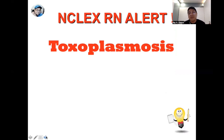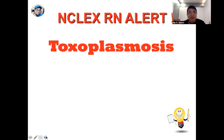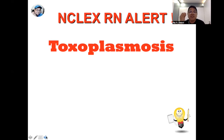The second important topic I'd like to highlight is toxoplasmosis, because more often than not we know very little about it. This is a parasitic condition caused by a protozoa known as Toxoplasma gondii, transmitted either through cat litter or half-cooked meat. Pregnant clients who develop the infection can develop complications specifically for the baby — toxoplasmosis can be fetotoxic. Therefore, always instruct the pregnant client not to discard or even clean the cat litter box, to use gloves while gardening, and to avoid it altogether.